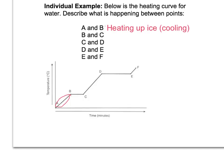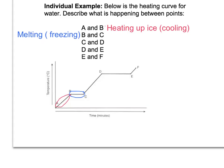So B to C is our next one. What's happening at B and C? Since there is no temperature change there, but we are still adding energy, something must be happening — it's a phase change. That phase change is either going to be melting or freezing, depending on which way we're going. If we're adding heat, it's melting; if we're taking heat away, it's freezing.